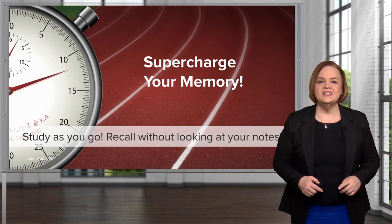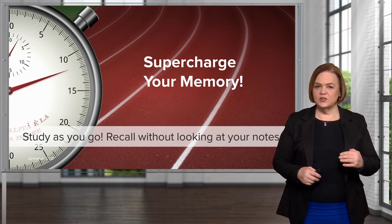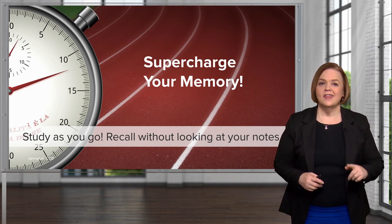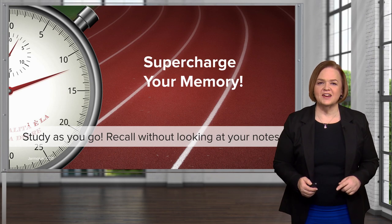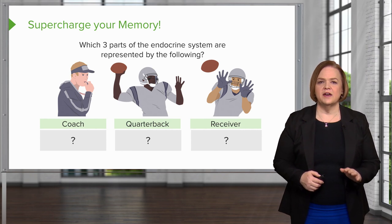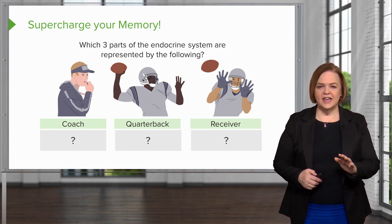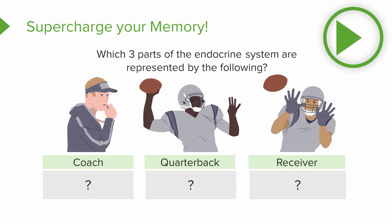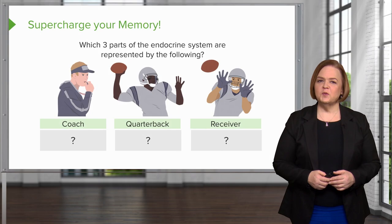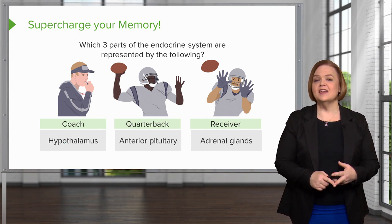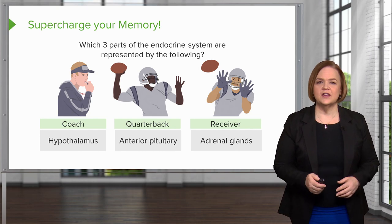Now it's your turn — let's supercharge your memory. Try to recall this information without looking at your notes. Which three parts of the endocrine system are represented by the coach, the quarterback, and the receiver? The coach, quarterback, and receiver are the hypothalamus, the anterior pituitary, and the adrenal glands.